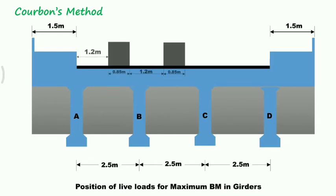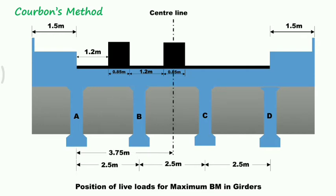Corbin's method is popular due to the simplicity of computations when the live loads are positioned nearer to the curb. As per IRC 6, for IRC Class A vehicle, the minimum distance from curb to the outer face of the wheel is 1.2 meters. The center of gravity of the bridge is 3.75 meters from the curb and center of the vehicle. From the center of the vehicle to the center line of the bridge, the eccentricity is 1.1 meters.